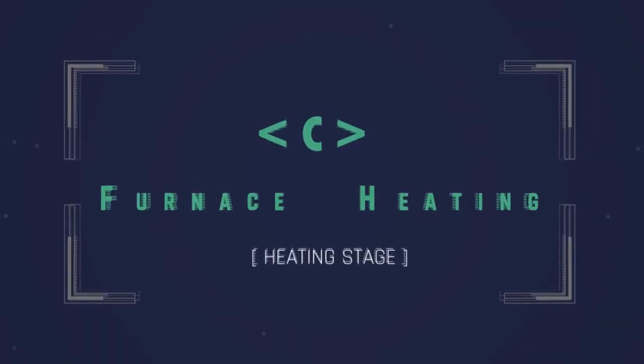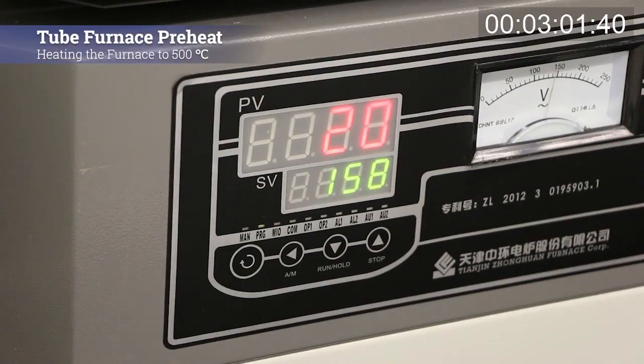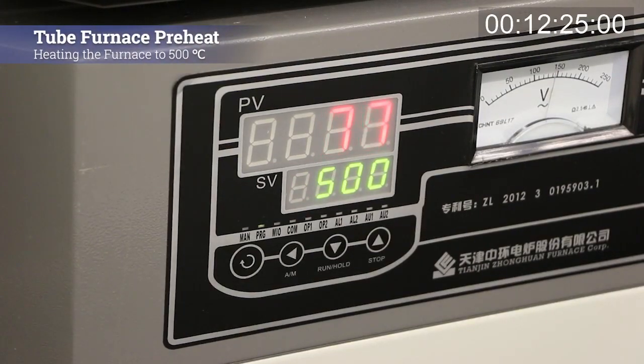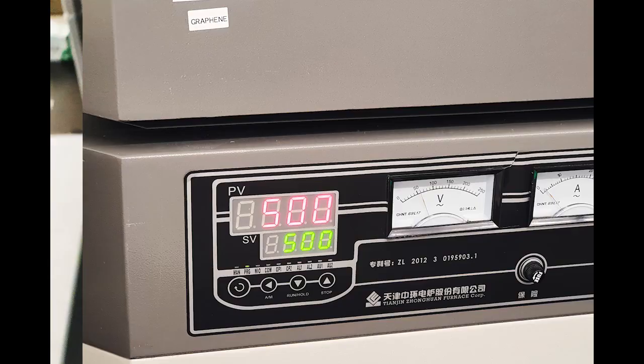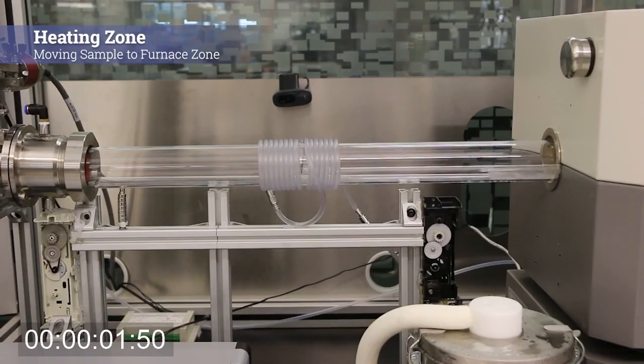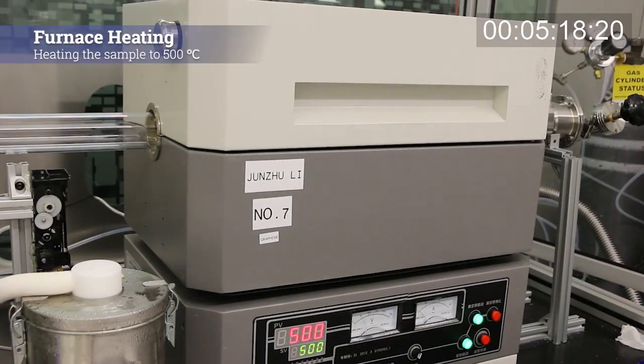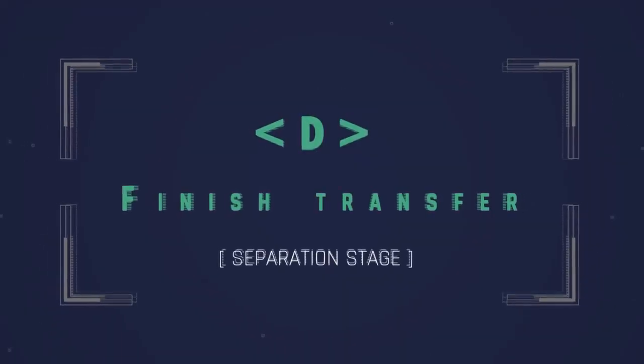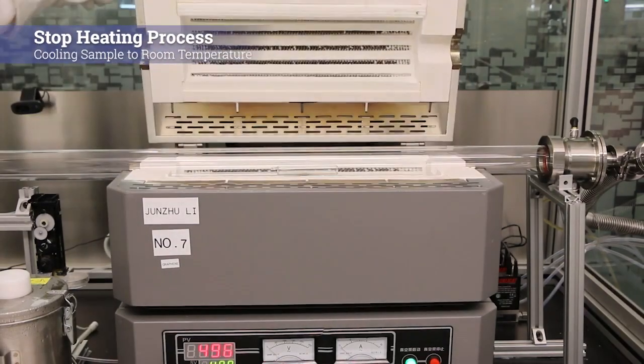Field-effect transistors manufactured on the sapphire-grown single-crystal graphene monolayer exhibited excellent performance with higher carrier mobilities. The superior electronic performance of the graphene grown on sapphire results from its high crystallinity and fewer folds on the surface.